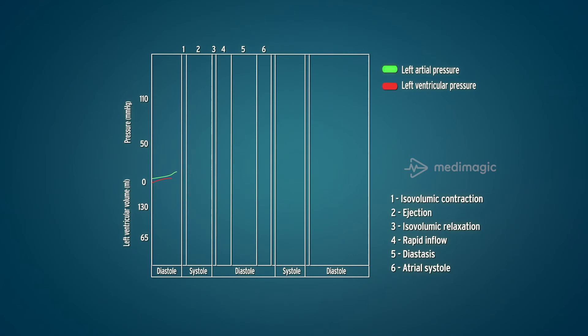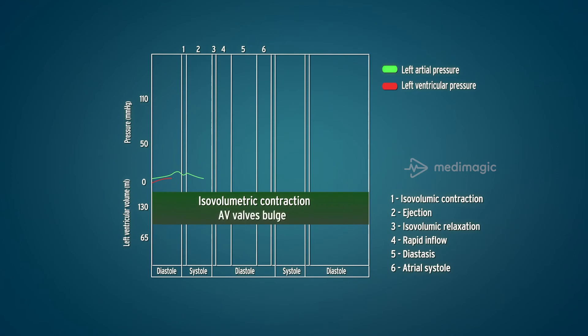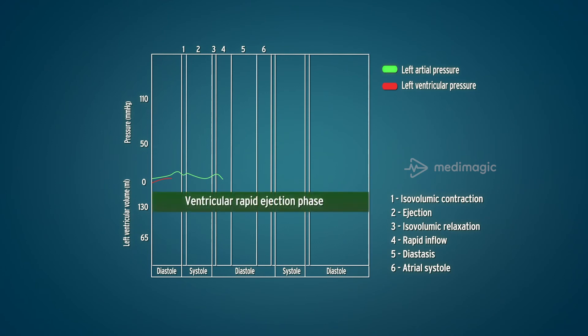Just after atrial systole, the atrium starts to relax and the pressure starts to fall. During the isovolumetric contraction, as the AV valves bulge, there is a sharp rise in the atrial pressure. The intra-atrial pressure then falls steeply as the atria relax and get filled with blood during the ventricular rapid ejection phase.